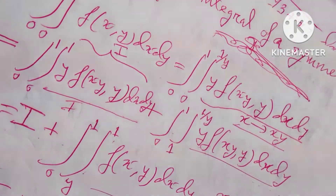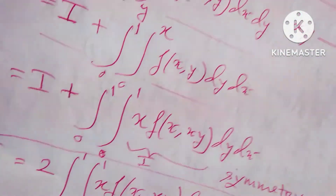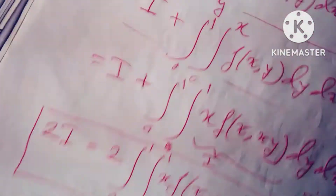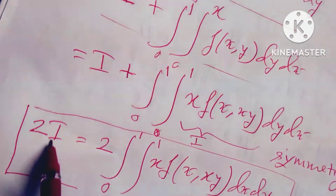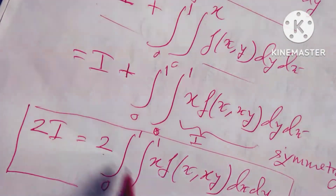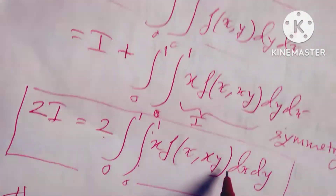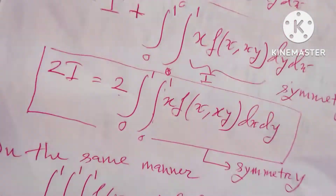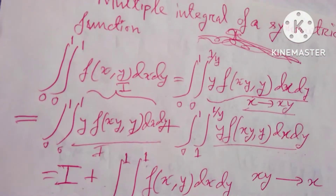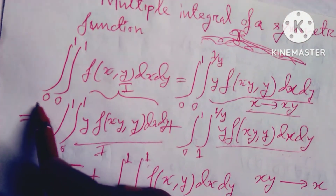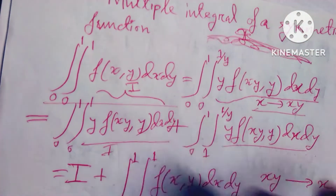By symmetry this portion is also I. So it is 2I. Therefore 2I equals 2 into the integral from 0 to 1, 0 to 1 of x into f(x, y) dx dy. And we get the equation: the integral of f(x, y) dx dy equals 2 into 2xy·y dy.